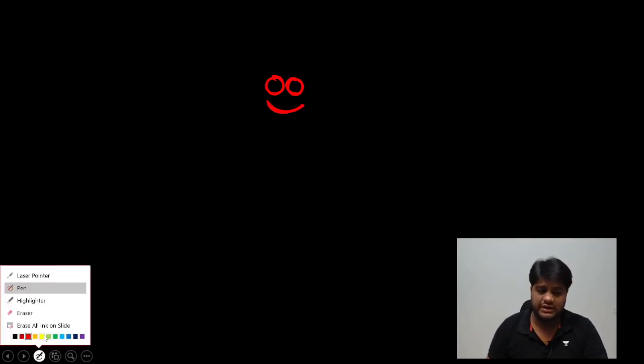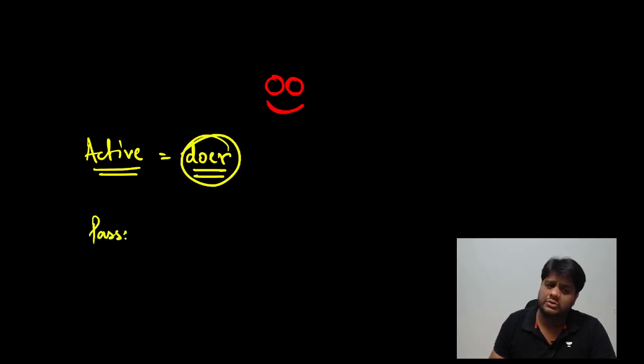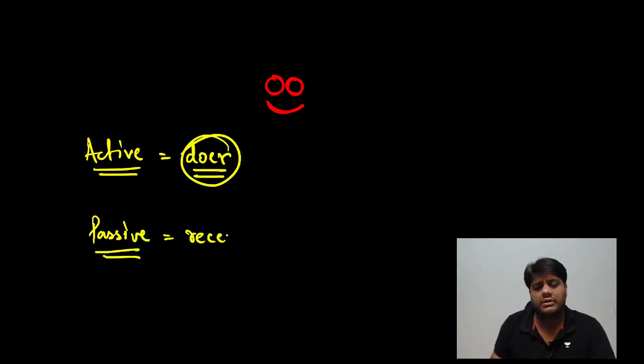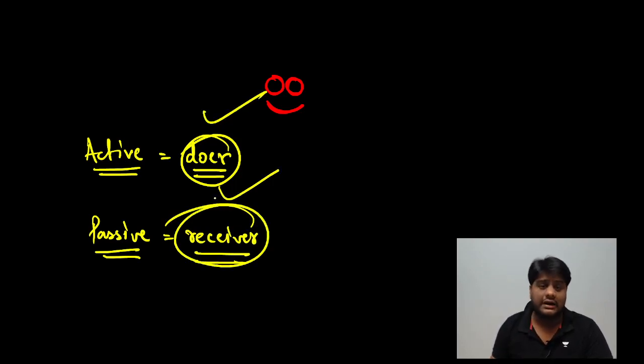So let's start. बच्चा लोग, passive voice होते हैं जब आप action के receiver हो। Doer हो तो active, receiver हो तो passive — right? This is the way. और इसी बात को मद्दे नज़र रखते हुए मैं spotting the error solve करूंगा।